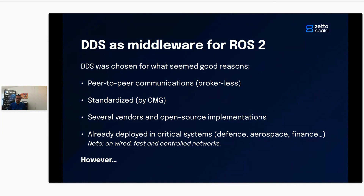It was chosen for good reasons. First, DDS is peer-to-peer communication — there is no broker, which is something similar to what happened in ROS1. In ROS1 there was one ROS master, but it was just used for discovery. Then all the ROS nodes were communicating peer-to-peer with each other. So that's why DDS was also considered for ROS2.